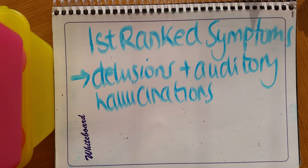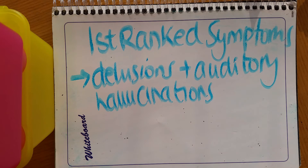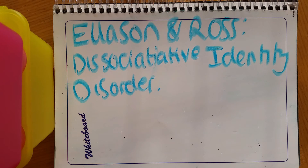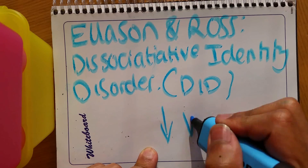Schneider listed psychotic symptoms he believed were unique to schizophrenia alone, referring to these as first-rank symptoms, which include delusions and auditory hallucinations. However, even these are seen in bipolar disorder and depression, weakening the validity of diagnosis. Similarly, Ellison and Ross point out that people with dissociative identity disorder (DID) actually have more schizophrenic symptoms than people diagnosed as schizophrenic, suggesting schizophrenic symptoms have low validity, as someone with DID can be diagnosed with schizophrenia.